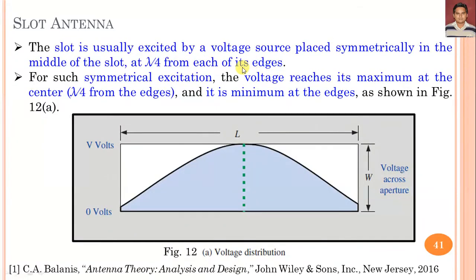For such symmetrical excitation, the voltage reaches its maximum at the center. Here you can see the voltage variation, or voltage distribution: at the center the voltage is maximum, and the voltage reaches minimum at the edges — at H1 and H2, each at a lambda by 4 distance from the center. So this is the voltage distribution along the slot antenna.